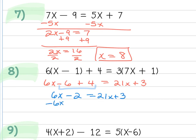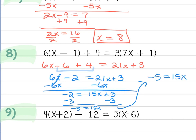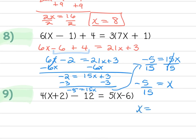If you prefer to move the 21x instead, you could subtract it. After moving 6x, I have -2 = 15x + 3. Then I move the 3, leaving -5 = 15x. To isolate x, divide both sides by 15 — you always divide by the number next to the variable. That gives x = -5/15. Always reduce your fraction by dividing both by 5, so x = -1/3.